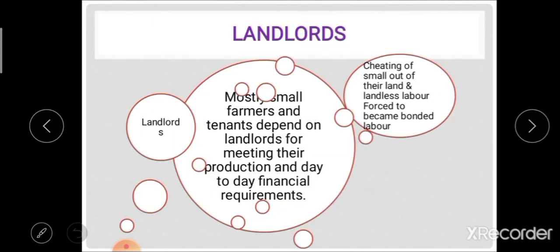The first non-institutional agency is landlords. Small and tenant farmers mostly depend on landlords for meeting their production and day-to-day financial requirements. This source has all defects associated with non-institutional sources — interests are very high, there is cheating of small farmers out of their lands, and landless laborers are forced to become bonded labor.